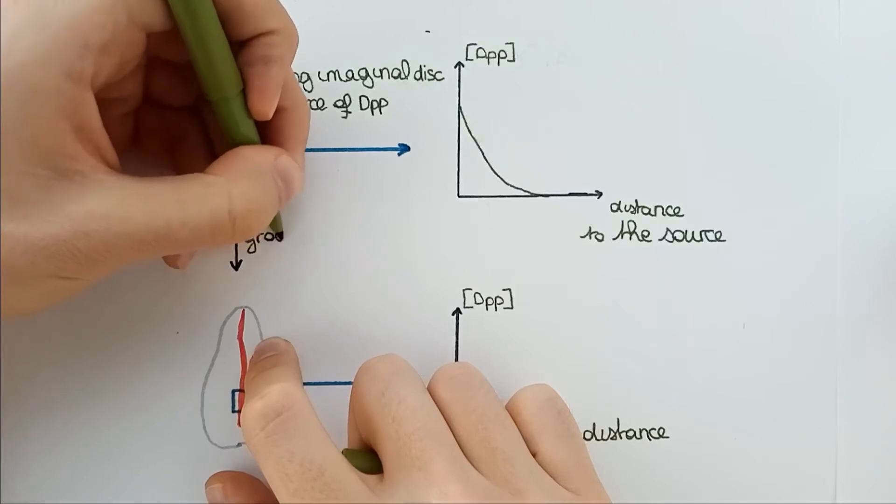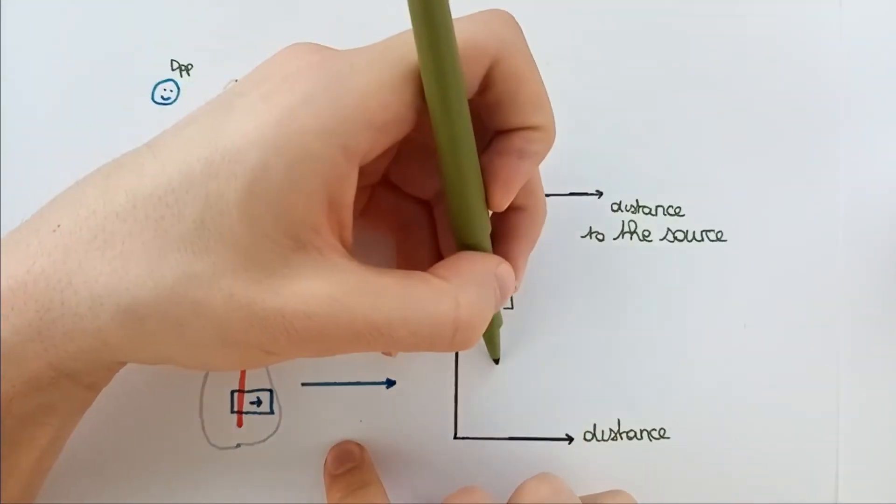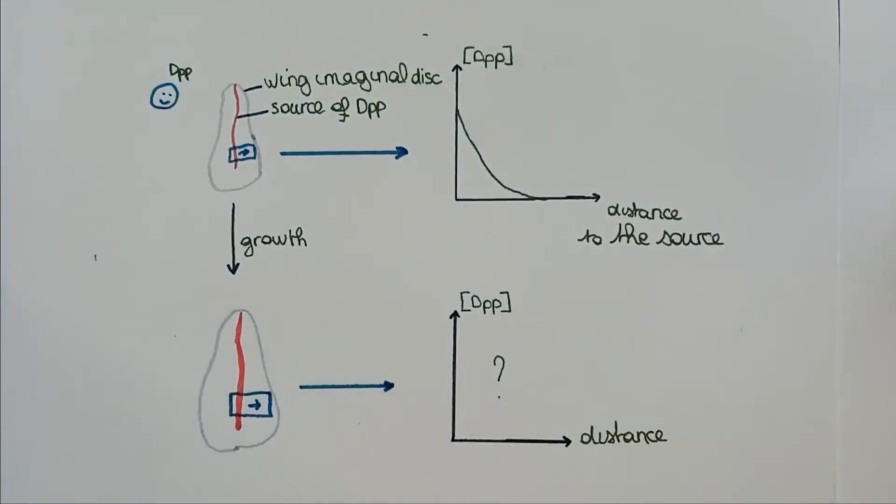Therefore, the question we can ask is how the morphogen gradient is evolving when tissue grows, and what link can be made between the tissue growth and DPP concentration.